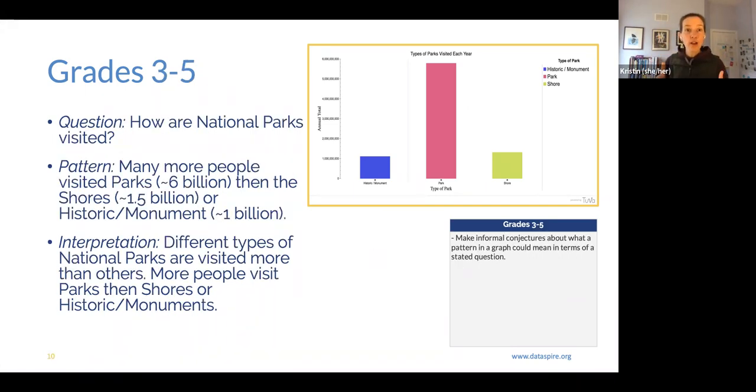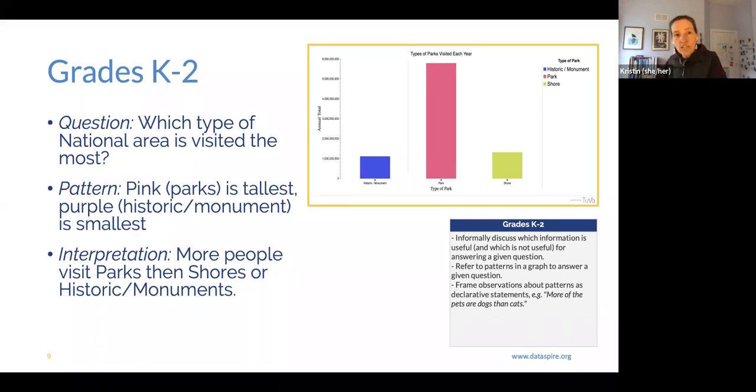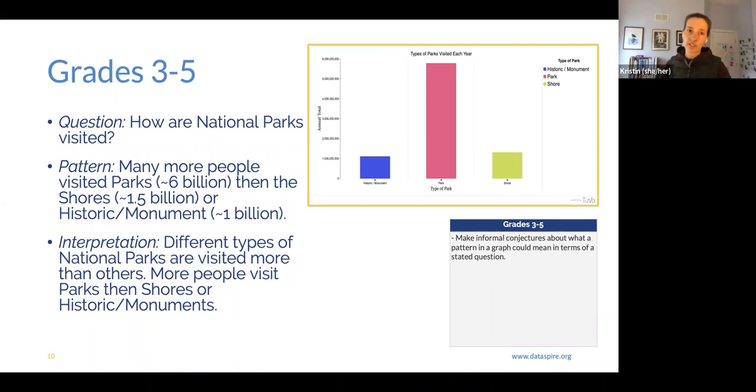We take that up a notch, we can use the same graph, we can ask a similar question but slightly more advanced for our students in grades three to five or when they're getting to that next level. So how are national parks visited might be our question. So as opposed to which is visited the most, now we're creating a broader question of how are the parks visited, still looking at the same data, but we're coming at it from a slightly different angle. So now the pattern is again, that more people come to the parks, but we can put some numbers behind it. So it's not just a visual comparison when looking at that pattern, but we're starting to integrate in our numeracy and our math concepts in as we're making sense of it. And then when it comes to the interpretation, we have a slightly different approach to it, right? Because it's how are the parks visited? Well, different types of parks are visited more than others. Based on these data, more people visit parks than the seashores. So we're building up and we're being able to make these informal conjectures based off of these data.